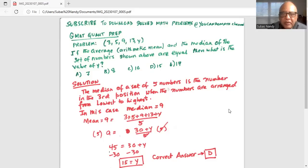The median of a set of five numbers is the number in the third position when the numbers are arranged from lowest to the highest, which in this case is true. We are going 3, then 5, then 9, then 13, and then Y, which is unknown. So median is 9, number in the middle, 50 percent number below it and 50 percent number above the median.